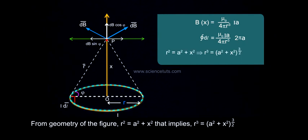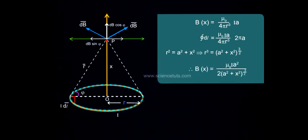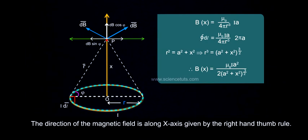From geometry of the figure, r² equals a² plus x². That implies r³ equals (a² plus x²) to the power 3/2. Therefore, Bx equals mu_0 i a² by 2 into (a² plus x²) to the power 3/2.